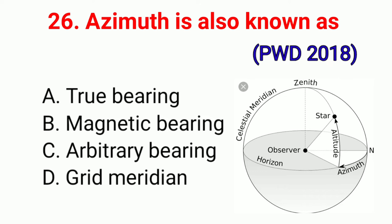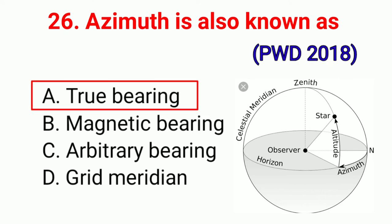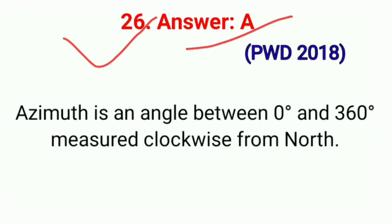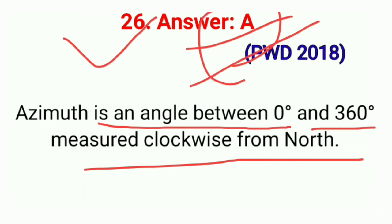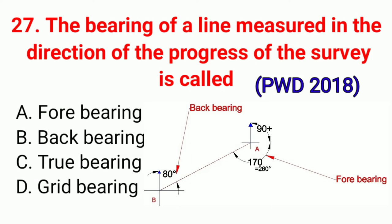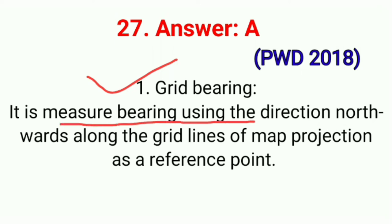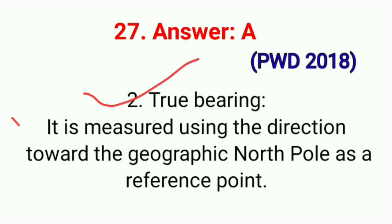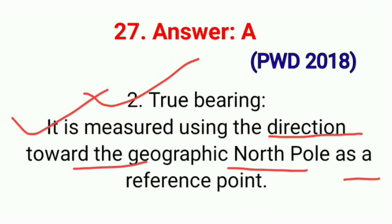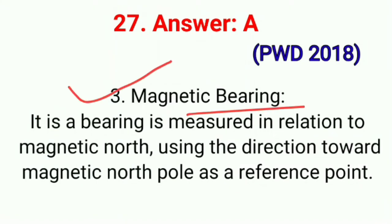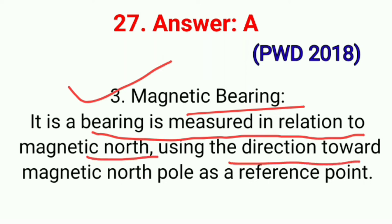Question No. 26. An azimuth is an angle between 0° and 360° measured clockwise from north. Correct answer option A. Question No. 27. The bearing of a line measured in the direction of progress of the survey is called — correct option A: Fore bearing. First, Grid bearing — measured using the direction of northwards along the grid lines of map projection as a reference point. Second, True bearing — measured using the direction toward the geographic north pole. Third, Magnetic bearing — measured in relation to magnetic north using the direction toward the magnetic north pole. Correct option A.